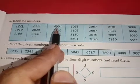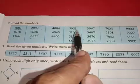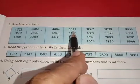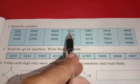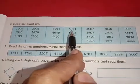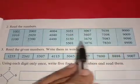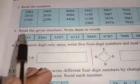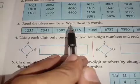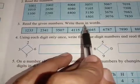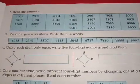Five thousand and fifty-one — fifty-one has five tens and one unit; the hundreds place is zero. Reading all these numbers. Now number three: read the given numbers and write them in words.